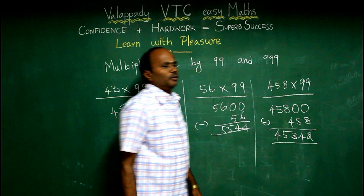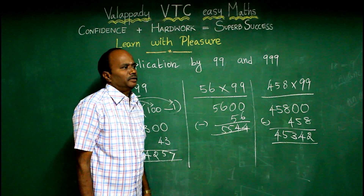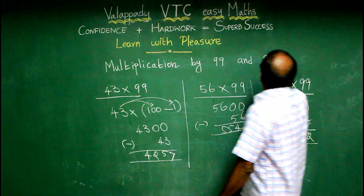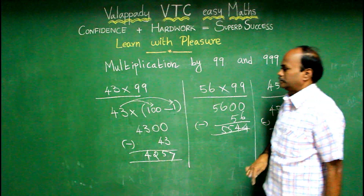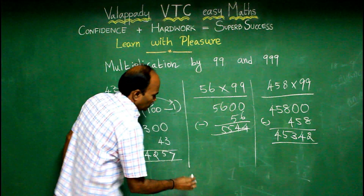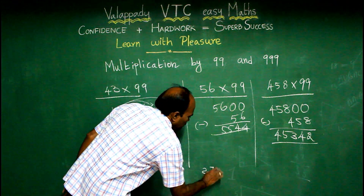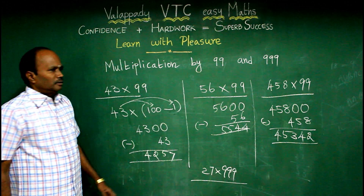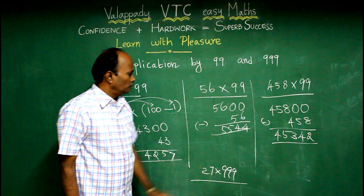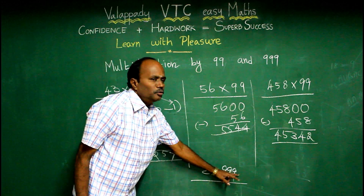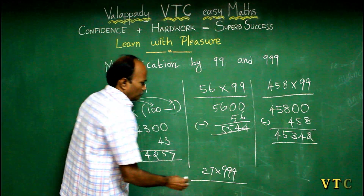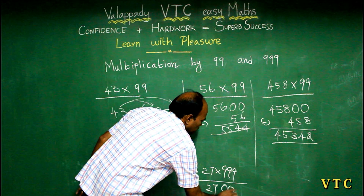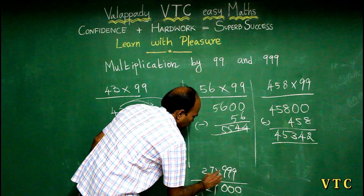If you want to use a number of 0, you can use a number of 999. Now, 27, 999. What is the concept? If you want to use a number of 9, you can use a number of 0. That is 27, 0, 0, 0 minus 27.